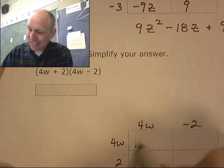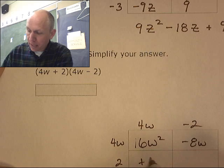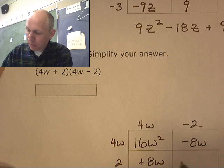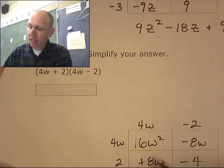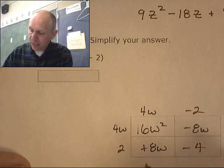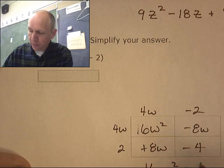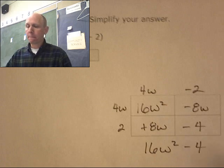4w times 4w, that's 16w squared, minus 8w, plus 8w, minus 4. What are those 8w's going to do? 8w minus 8w, they cancel out. That's what's cool here. So we're left with 16w squared minus 4. The middle terms canceled out. All right, that's it.